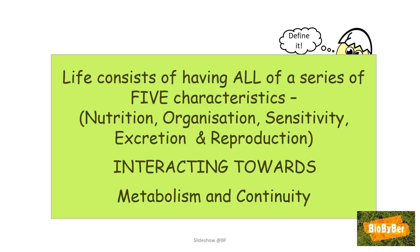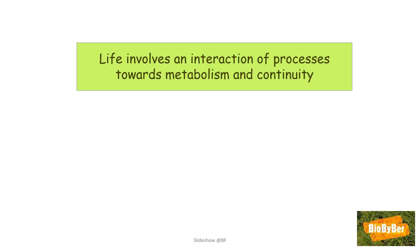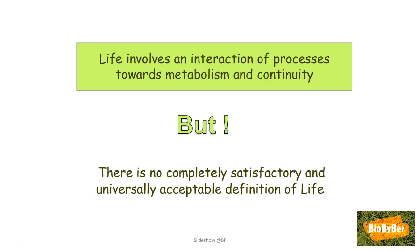To come up with a definition of life: life consists of having all of a series of five characteristics — nutrition, organisation, sensitivity, excretion, and reproduction — interacting towards metabolism and continuity. This definition is vital and is the objective of this whole section: we want to search for a definition of life. As an add-on, life involves an interaction of processes towards metabolism and continuity. We'll just mention that coming up with a definition of life has caused a lot of disagreement amongst scientists, and there is no completely satisfactory or universally acceptable definition of life.